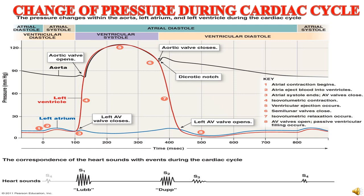Looking further at the diagram, the first heart sound 'lub' is observed when the AV valves close, the second heart sound when isovolumetric relaxation occurs, and the third and fourth heart sounds are generally not audible in adults. This figure depicts how the pressure changes during the cardiac cycle, comprising the whole relaxation and contraction phases of both the atrium and ventricles.